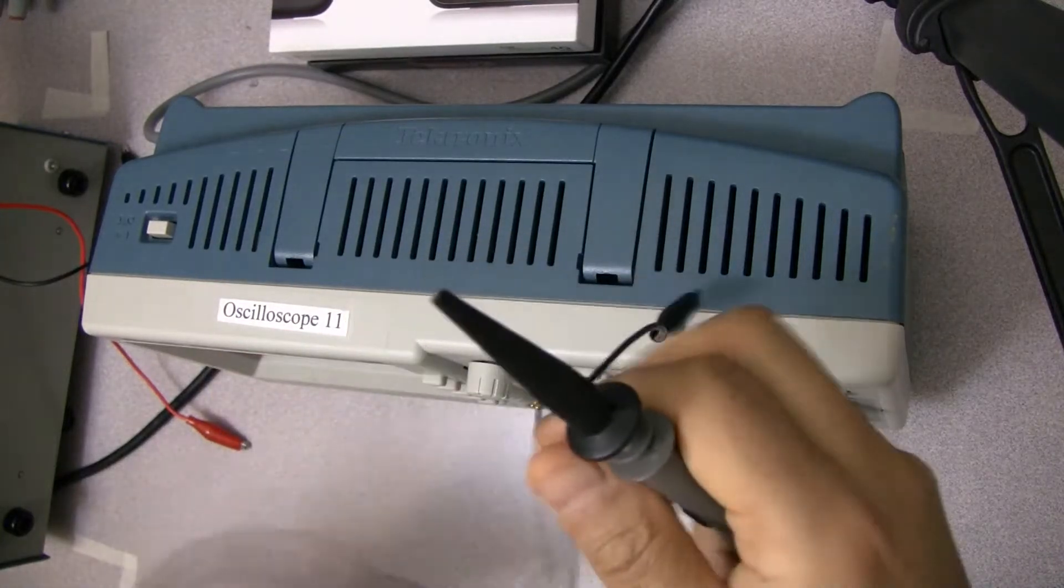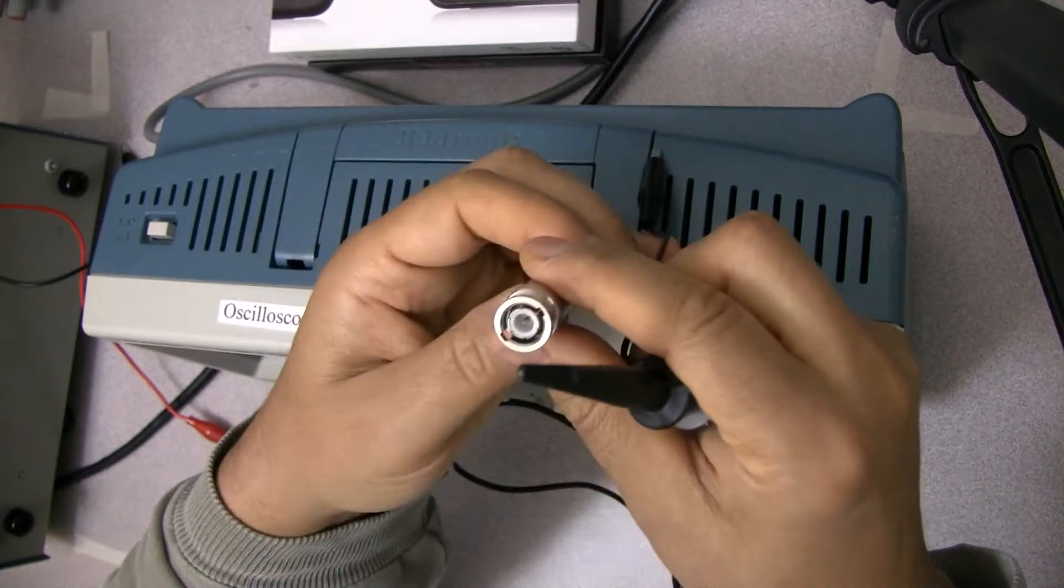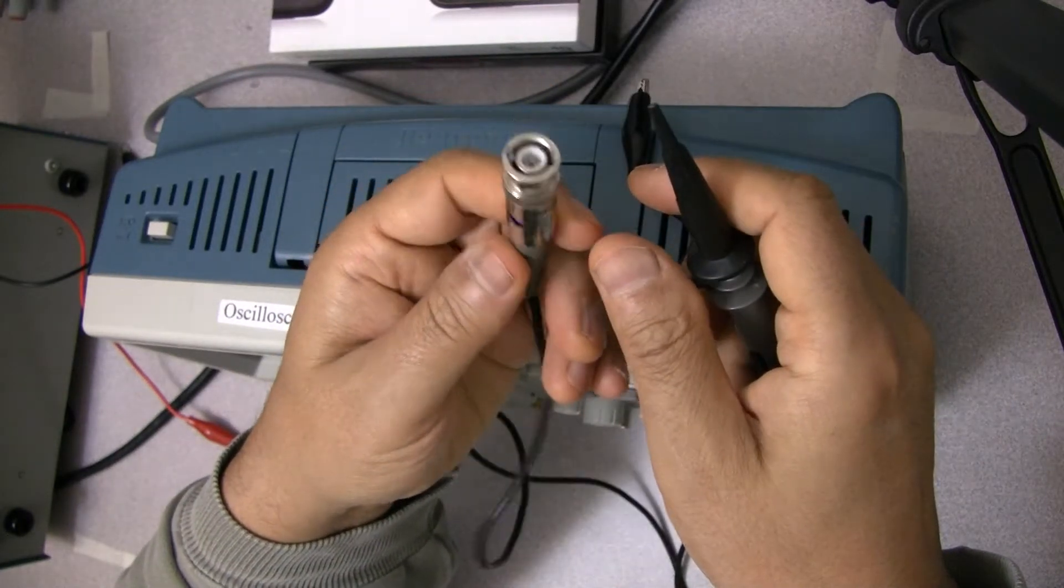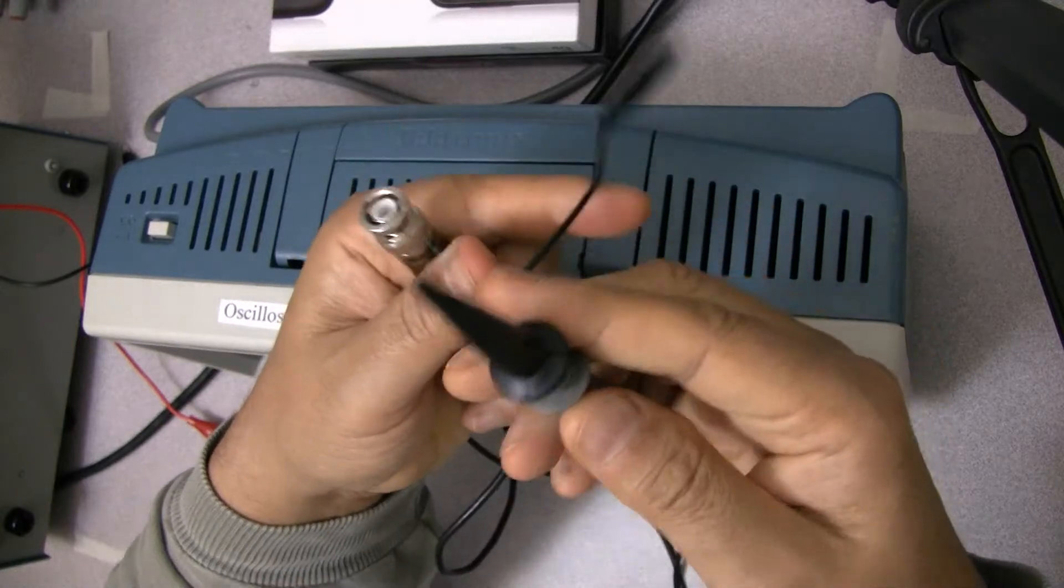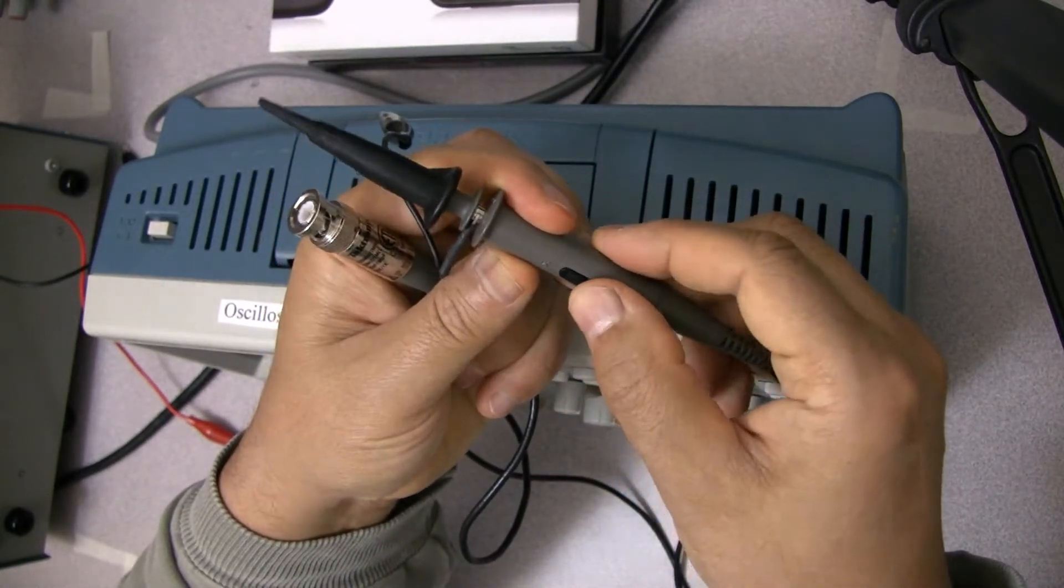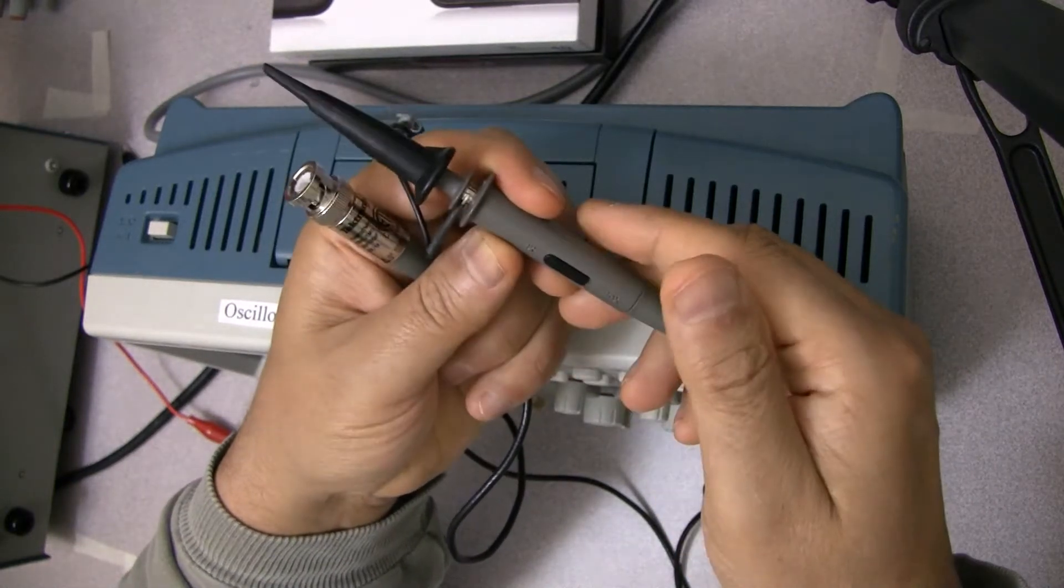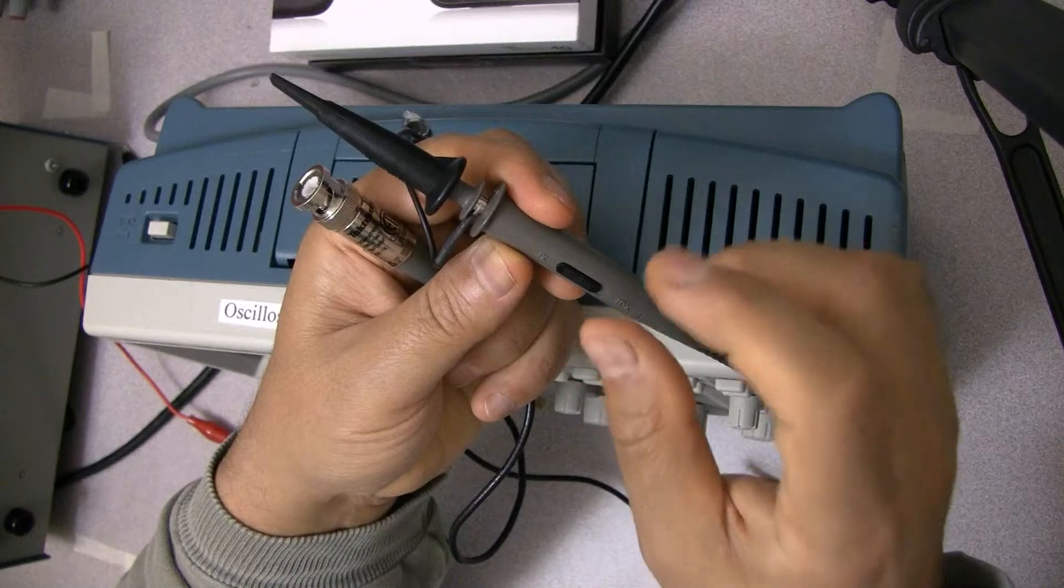The name of this connector is typically referred to as a probe. One end looks like this, more or less like your cable connection that you get at home, and this is the other side of it.